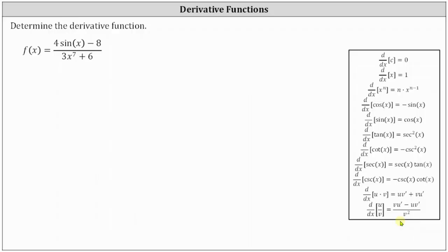The quotient rule is shown here at the bottom, where the derivative of u divided by v with respect to x is equal to v times u prime minus u times v prime, all divided by v squared. Or equivalently, the derivative equals the denominator times the derivative of the numerator, minus the numerator times the derivative of the denominator, all divided by the denominator squared.